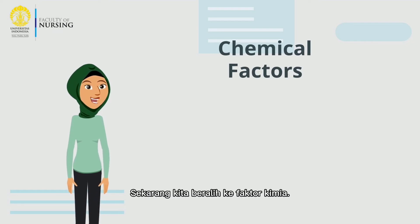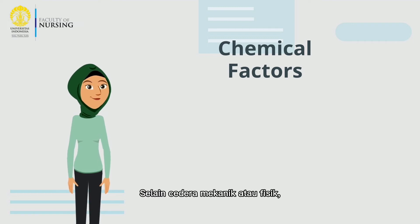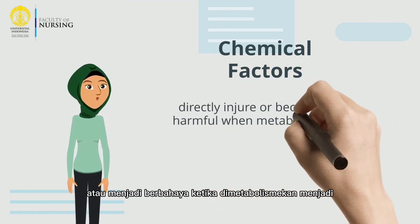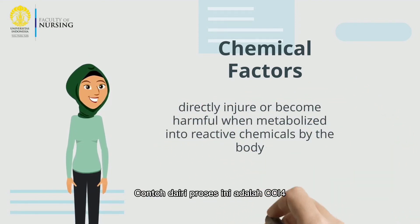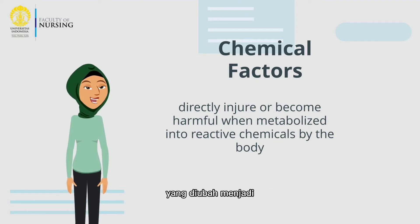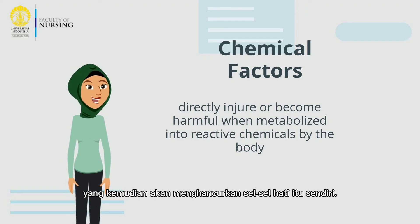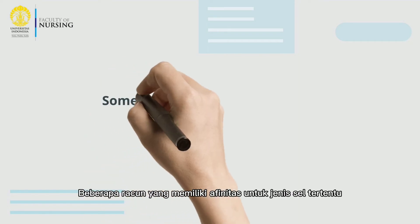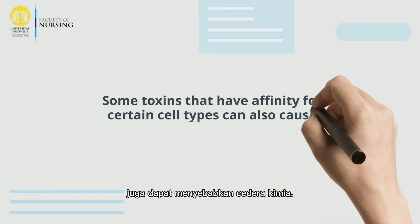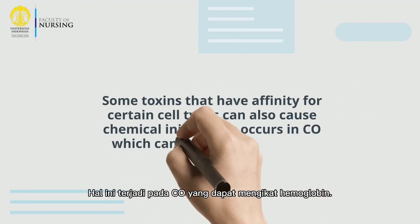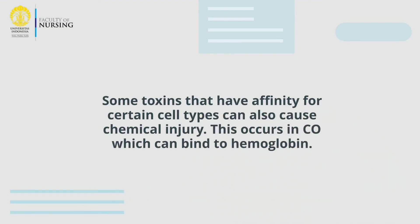Now we are moving to chemical factors. In addition to mechanical or physical injuries, there are chemical injuries. These can directly cause injury or become harmful when metabolized into reactive chemicals by the body. An example is CCl4, which is converted into a very reactive free radical substance, CCl3, by liver cells, which will then destroy the liver cells themselves. Some toxins with affinity for certain cell types can also cause chemical injury, as occurs with CO which can bind to hemoglobin. Chemical injury can also be caused by acidic or alkaline chemicals that are corrosive to cell structures.